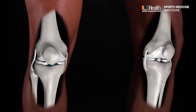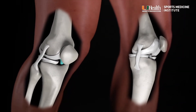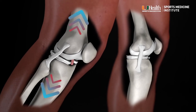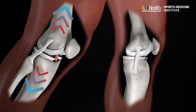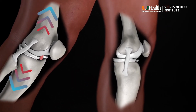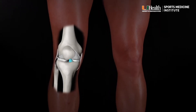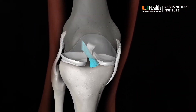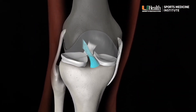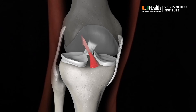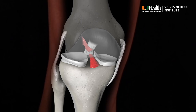ACL injuries vary in severity. The least severe is a sprain, where the ACL is stretched but still able to keep the knee joint stable. Sometimes, more rarely, the ACL is stretched to the point of a partial tear. The most debilitating injury occurs when the ligament is completely torn, leaving the knee joint highly unstable and at risk of injuring other structures if left untreated.